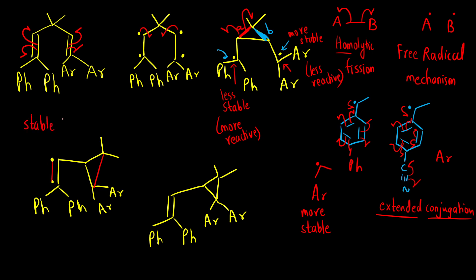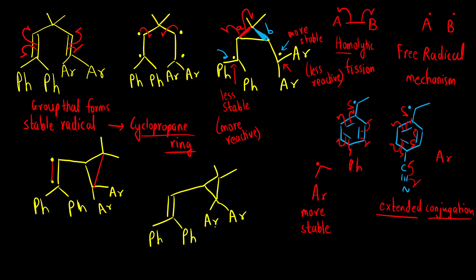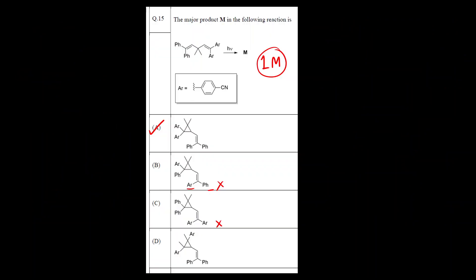What is the trick for remembering the product of di-pi methane rearrangement? The group that forms the stable radical is always part of the cyclopropane (three-membered) ring. Here, Ar was more stable, so it is attached to the three-membered ring. The less stable group will be part of the alkene. Always remember: the more stable radical will be attached to the three-membered ring.